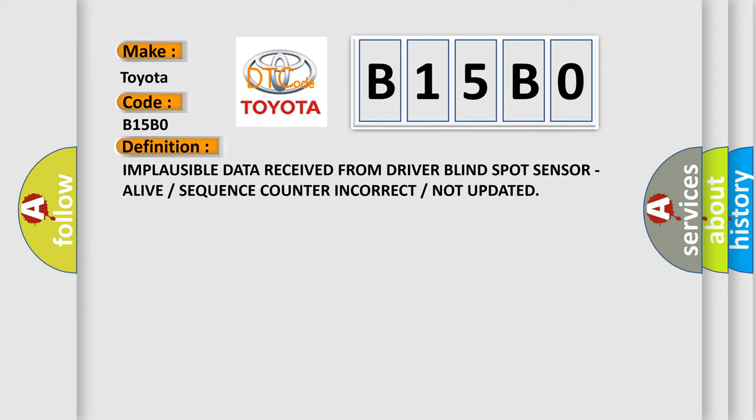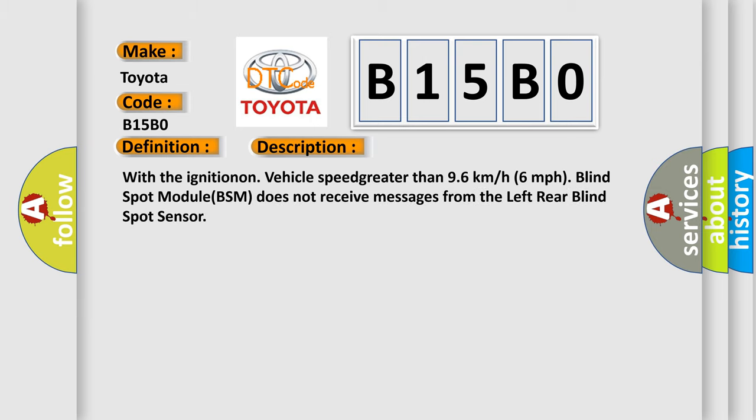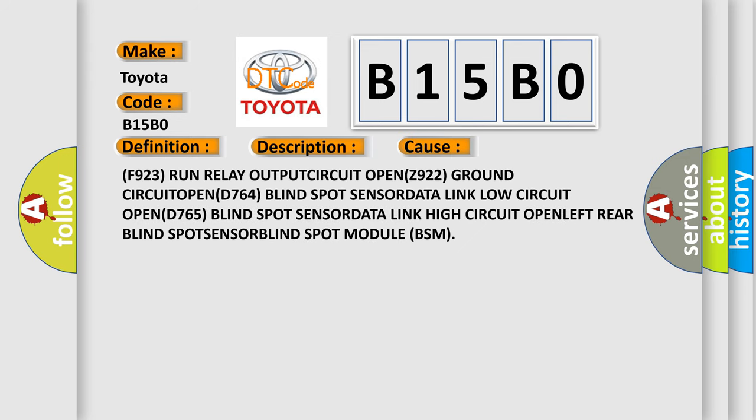Here is a short description of this DTC code. With the ignition on and vehicle speed greater than 96 km/h, the blind spot module (BSM) does not receive messages from the left rear blind spot sensor. This diagnostic error occurs most often in the following cases: F923 run relay output circuit open, Z922 ground circuit open, D764 blind spot sensor data link low circuit open, D765 blind spot sensor data link high circuit open, left rear blind spot sensor.